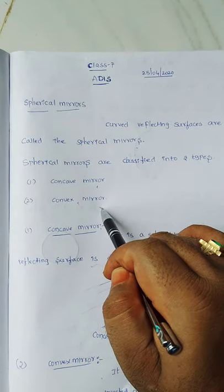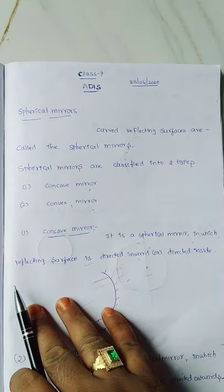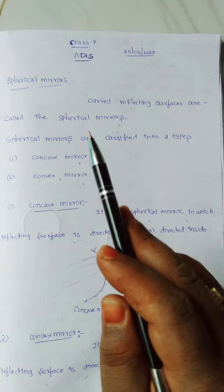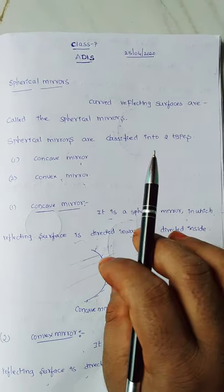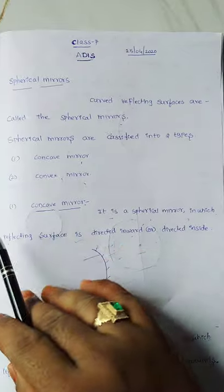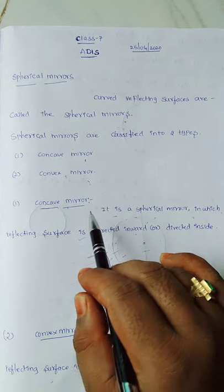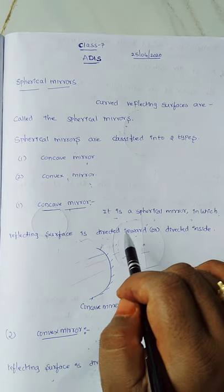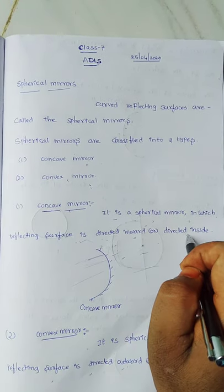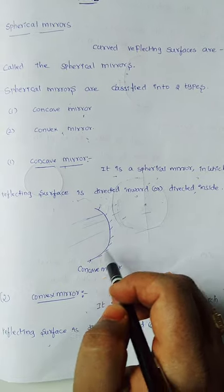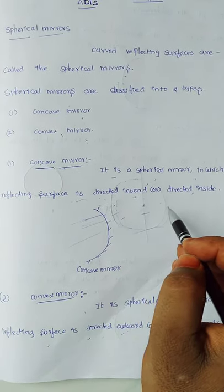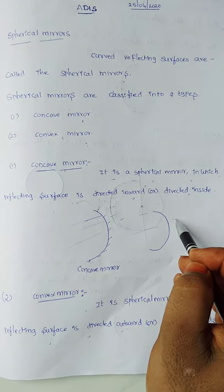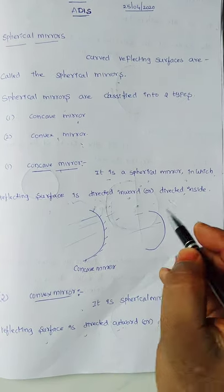What is the meaning of concave mirror? It is one of the spherical mirrors — a curved reflecting surface. For concave mirror, the reflecting surface is directed inward or directed inside. For example, if you see this curved reflecting surface, they have two surfaces — this side is one surface, this side is another surface.